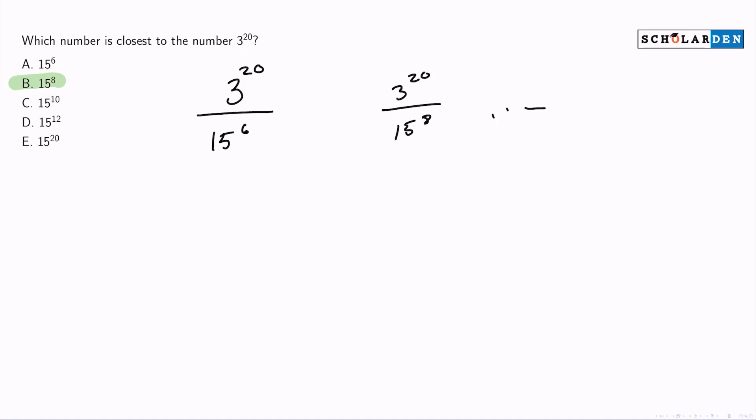Whichever one is closest to 1, well, that means that 3 to the power of 20 and that specific term are closest to each other. Because any number divided by itself is 1. And then the further away those numbers are apart from each other, the further away from 1 they will be. Their quotient, that is. So just watch along, and I'm going to show you what I've come up with.